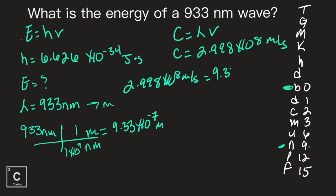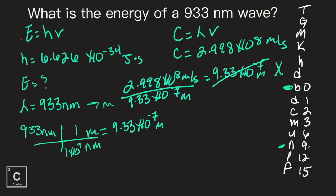I put 9.33 times 10 to the negative 7 meters into my problem and I'm solving for frequency. x is being multiplied by 9.33 times 10 to the negative 7, so to get rid of it I divide. My frequency: 2.998 exponent key 8 divided by 9.33 exponent key negative 7 equals. I need three sig figs. Frequency equals 3.21 times 10 to the 14 — my meters cancel out, leaving per seconds or hertz.